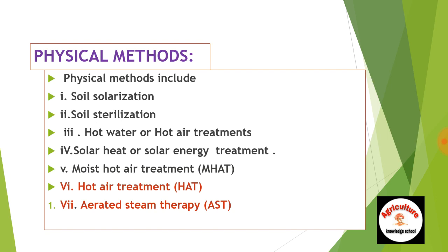कौन कौन सी physical methods हम agriculture में use करते हैं pathogen के control करने के लिए? पहली है soil solarization, दूसरी है soil sterilization, तीसरी है hot water और hot air treatments, चौथी है solar heat और solar energy treatment, पाँचवी है moist hot air treatment, और सातवीं है aerated steam therapy.